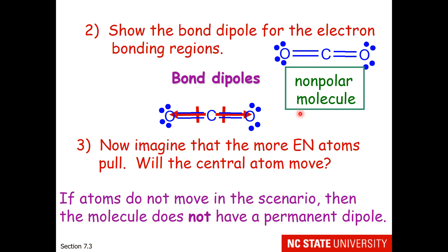Therefore, carbon dioxide has only dispersion forces and no dipole forces. Looking at partial charges: each oxygen is partially negative and the carbon is partially positive. The center of positive charge is on the carbon. The center of negative charge is also on the carbon. So if the center of positive charge and negative charge are in the same location, we have a non-polar molecule.